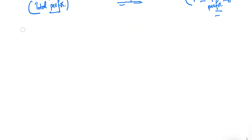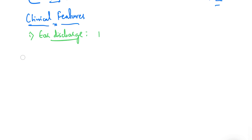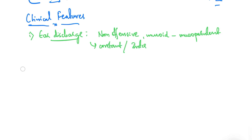Now looking at the clinical features of CSOM: the first feature is ear discharge. In the Tubotympanic type, the ear discharge is non-offensive — no foul smell — and is generally mucoid, sometimes mucopurulent. The discharge can be constant or intermittent. It often appears during upper respiratory tract infection or with accidental entry of water into the ear.